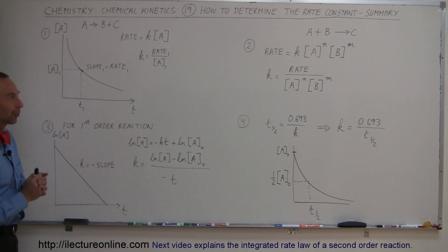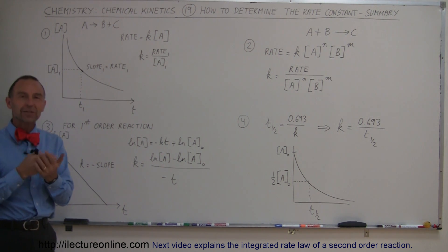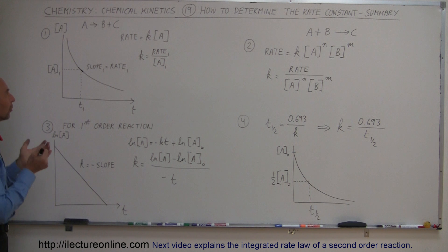Welcome to our lecture online, and now that we've learned all kinds of things about chemical kinetics, I thought it would be a good idea for us to review the various ways in which we can find K, the rate constant, the constant that's associated with how fast a reaction is taking place. So we've learned a few things.